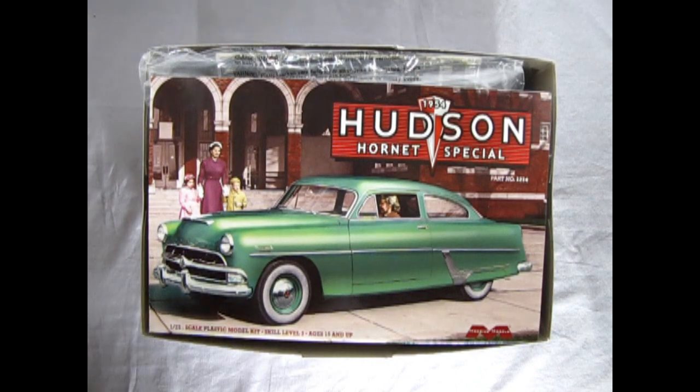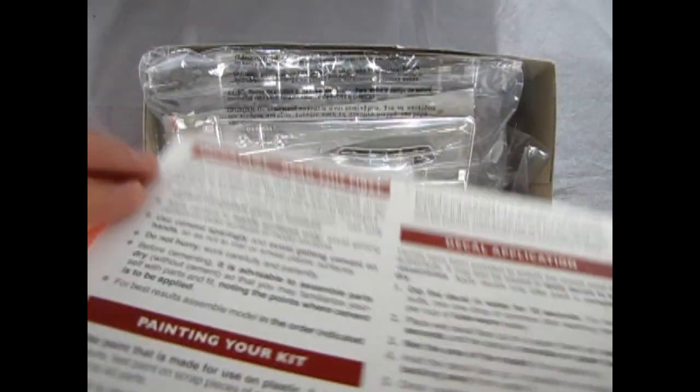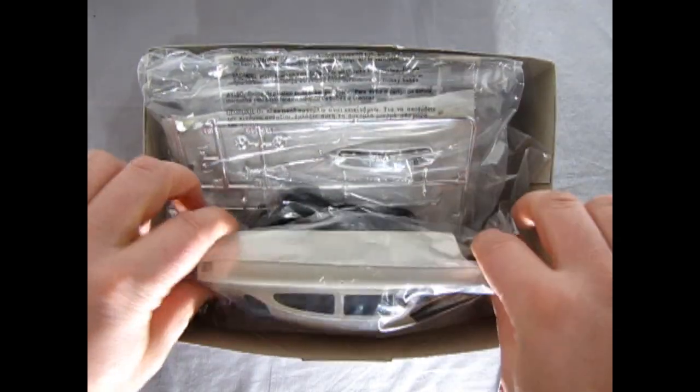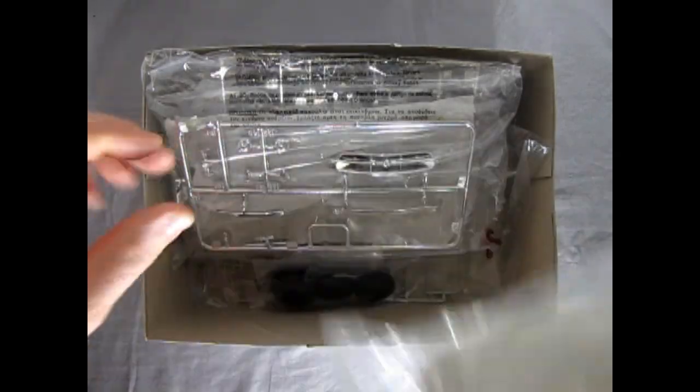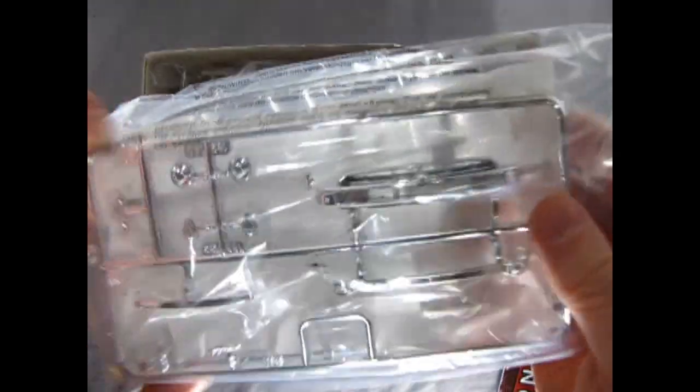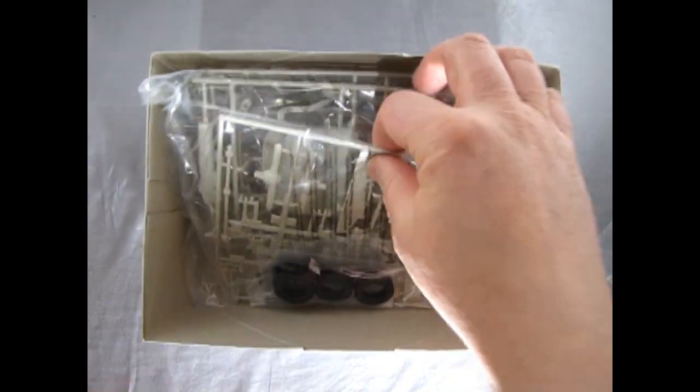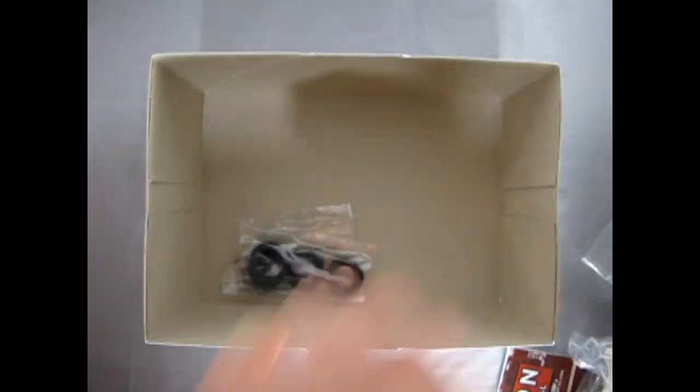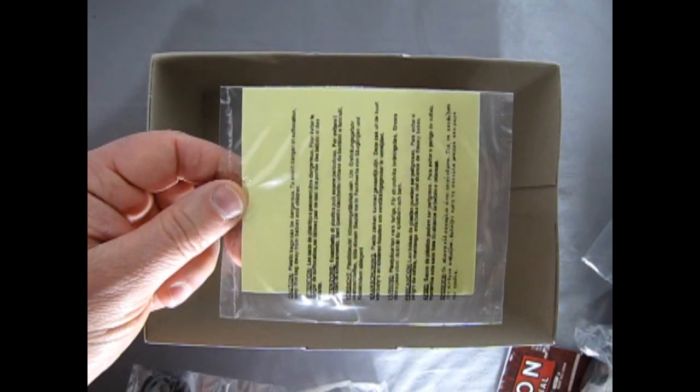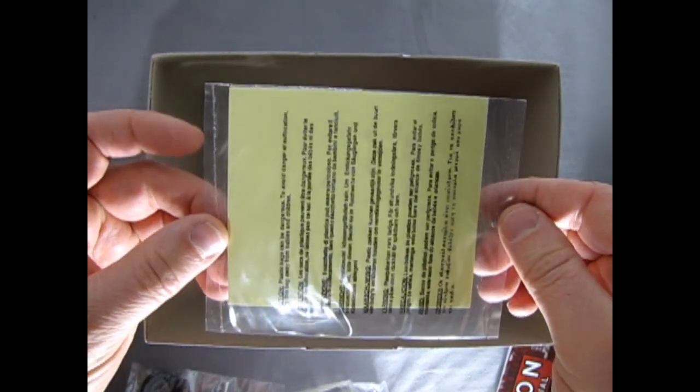As you can see right away we get a full color instruction sheet which is again very nice folded into a little booklet. We have our wonderful Hudson Hornet body and under chassis in a plastic bag. We have our chrome which has a little paper in between so that the chrome doesn't get scratched up. Then we have our glass and then all the rest of our plastic components and our tires.